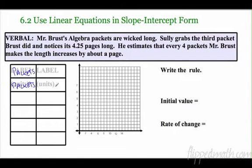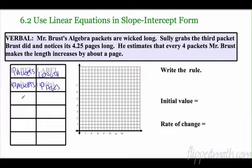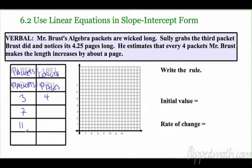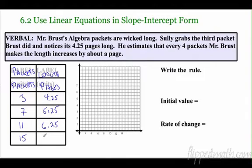We measure the length of these packets by pages. The first one noticed was the third packet and it was 4.25 pages. Every four packets it goes up one page, so this should be 0.25. From the third packet, four packets from now it's going to be seven packets, eleven packets, and fifteen. So the lengths would be 4.25, 5.25, 6.25, and 7.25.